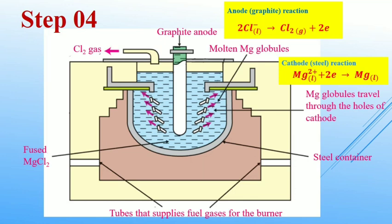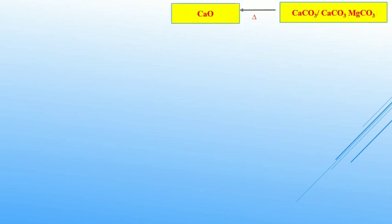Through this slide, I will briefly summarize the whole process of magnesium extraction. First, we have to take calcium carbonate or limestone or we can use calcium carbonate, magnesium carbonate mixture that is dolomite. And thermal decomposition of calcium carbonate or dolomite results in calcium oxide.